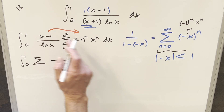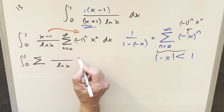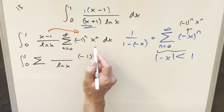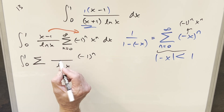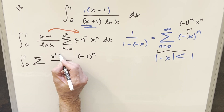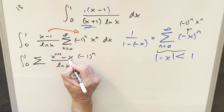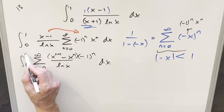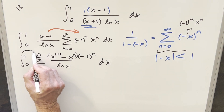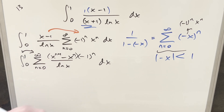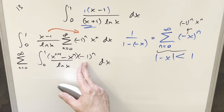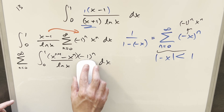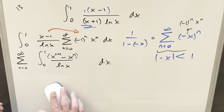I also want to distribute the x minus 1 into x to the n. Distributing, x to the n becomes x to the n plus 1 minus x to the n. Then let's swap the order of integration with the summation. The (minus 1) to the n is just a constant with respect to x, so I can bring this outside of the integral.